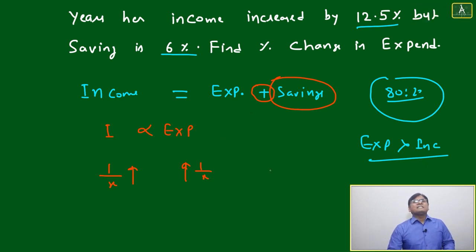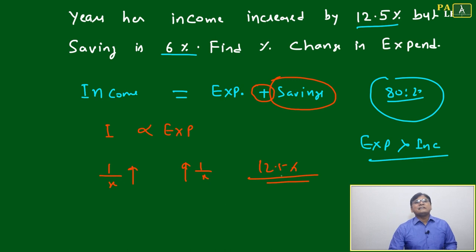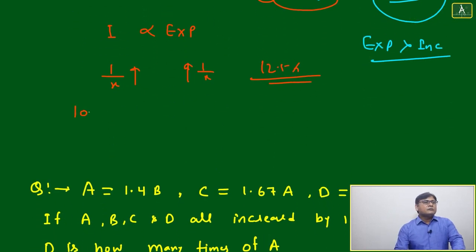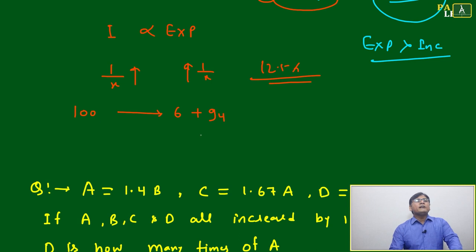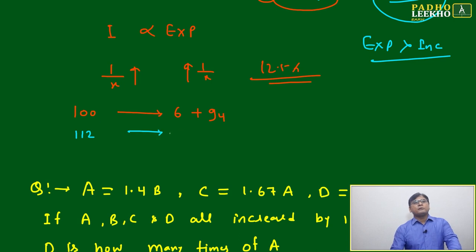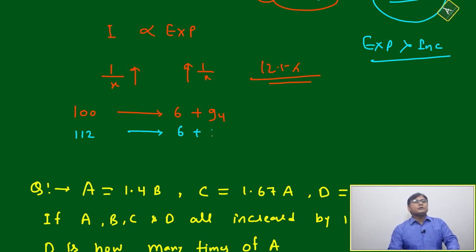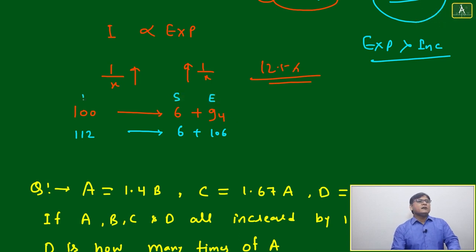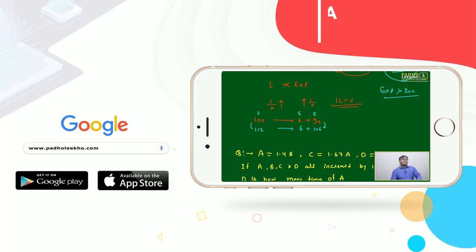So the percentage change in expenditure will simply be 12.5% — nothing else. To verify: take income as 100. Savings are 6%, so expenditure was 94. Income increases by 12.5% to 112. Savings remain 6. So expenditure becomes 112 minus 6, which is 106. The change in expenditure from 94 to 106 is exactly 12.5% increase. So the answer is 12.5% increase in expenditure.